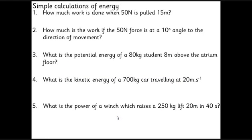We've got a big set of equations there. Obviously, the crucial thing is to know which ones to use. These are some nice straightforward questions which are really just about getting used to using the equations. The work done when a 50 Newton force is pulled 15 meters is just work equals force times distance, 50 times 15, 750 joules. If it's a 50 Newton force but at a 10 degree angle, then we've got Fs cos theta, so force times the distance, still 15 meters, times cos 10, which gives slightly less work.